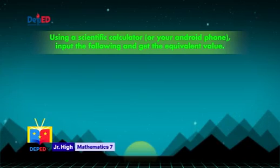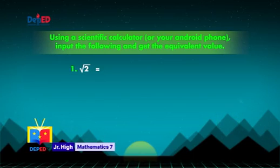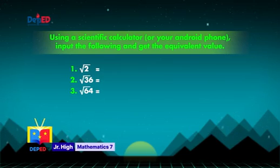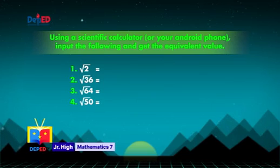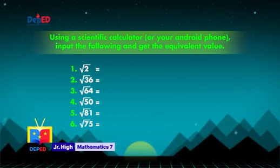Input the following and get the equivalent value. Round off your answer to the nearest hundredths. Number 1: square root of 2. Number 2: square root of 36. Number 3: square root of 64. Number 4: square root of 50. Number 5: square root of 81. And number 6: square root of 75.